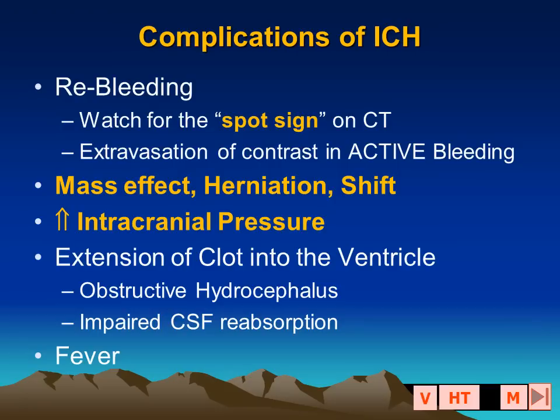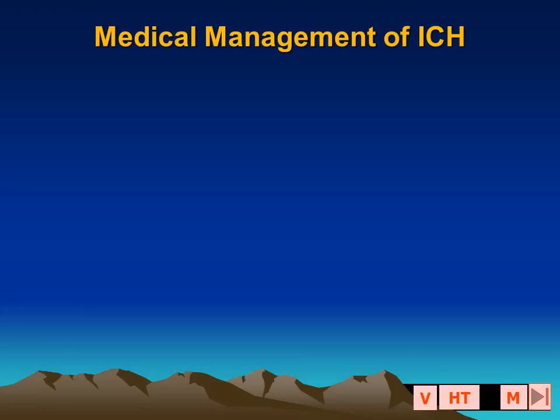Complications of spontaneous intracerebral hemorrhage include an expanding hematoma or re-bleeding — watch for the spot sign on contrast-enhanced CT. There can be mass effect, herniation and shift, increased intracranial pressure, and extension of clot into the ventricle that may cause the patient to have a fever.